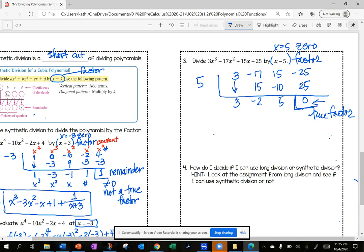So my answer is, this is my x cubed, so I am at 1 degree lower. This will be x squared, x, and my constant. My answer is 3x squared minus 2x plus 5. I'm going to skip this. End of lesson.